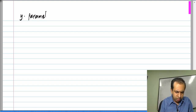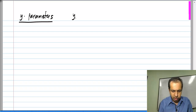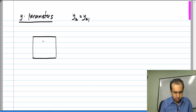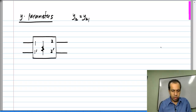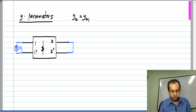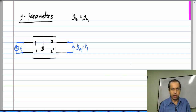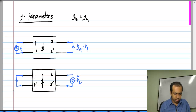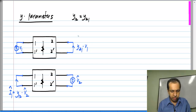Let us first take Y-parameters. Reciprocity says that y12 equals y21. If I have a resistive network and two ports, let us say I connect V1 to the first side and short circuit the second side. The current here would be, by definition, y21 times V1. On the other hand, if I connect V2-hat to the second port and short circuit the first port, the current here would be i1-hat which is equal to y12 times V2-hat. Let me define this current as i2.